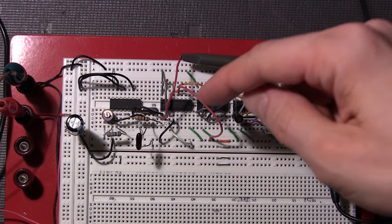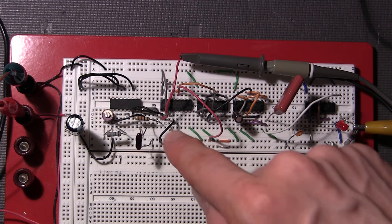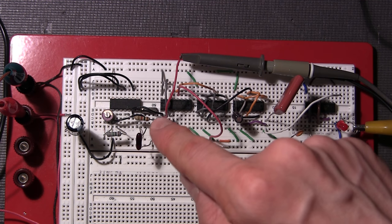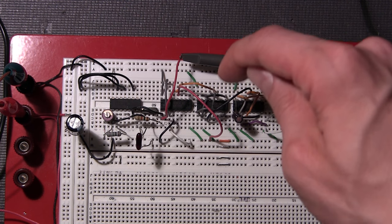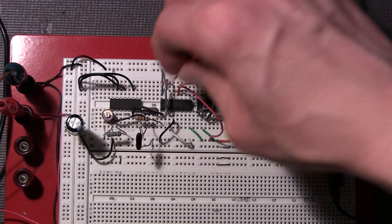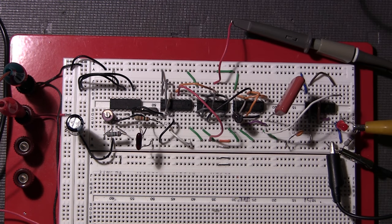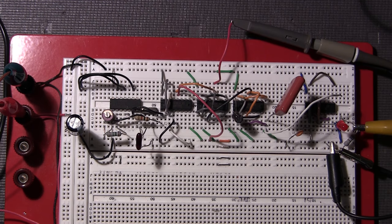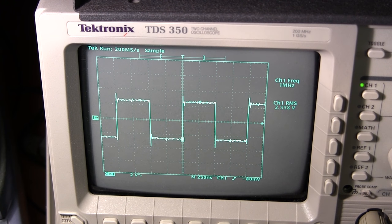I'll move the probe over to the output of the first divide by 4 IC. It's taking that 4 megahertz dividing it by 4 so we should have 1 megahertz going into this second IC. I'll move this over to the input here and just move my scope accordingly and we'll take a look at that signal. As you can see we're at 1 megahertz.